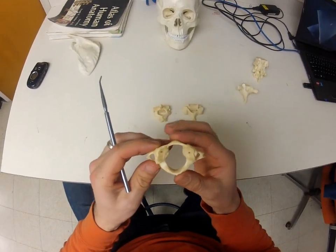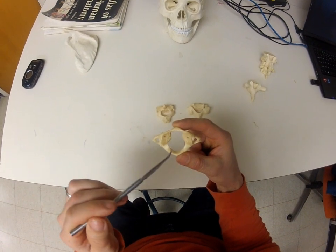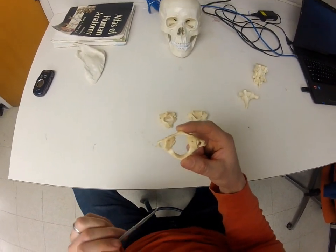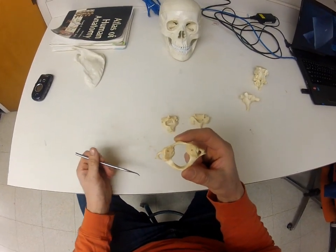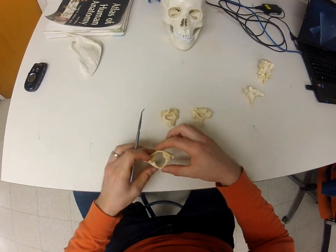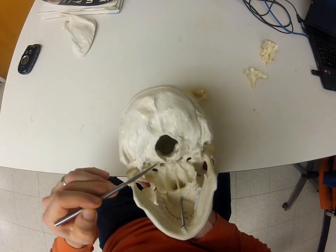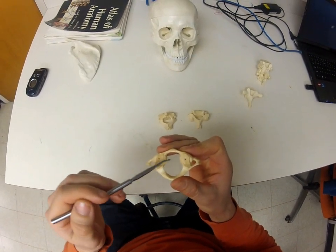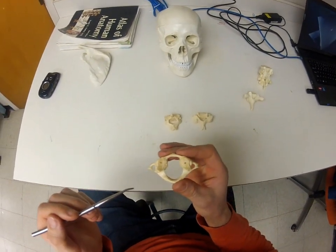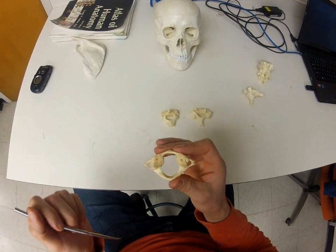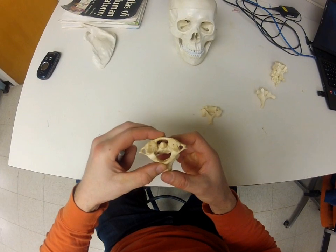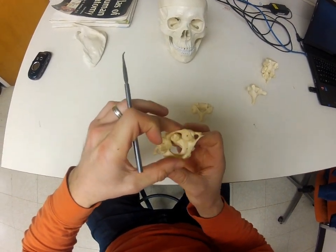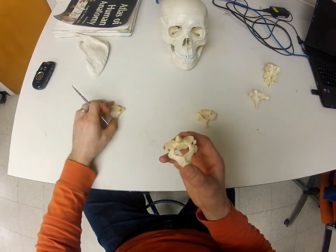Looking at the atlas, a characteristic trait is that it does not have a body. The openings on either side are transverse foramen - all cervical vertebrae have these as a distinguishing feature. The occipital condyles from the skull sit in the receptacles on C1 - this is the joint allowing the skull to flex and extend, or nodding yes. When the atlas rests on C2, the axis, it creates a pivot point allowing the head to rotate side to side - saying no. This projection on C2 is called the dens, which is the unique feature of the axis.